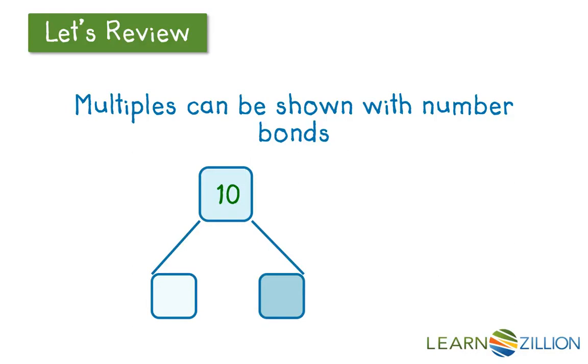At the bottom of the number bond are the factors, in this case 1 times 10. Number bonds help us see the multiples of a number at the top and the factors of the number at the bottom. In this case the first multiple of 10 that we have is 10 and those three dots that we have after our green 10 show that is the beginning of a list that will continue and go on.